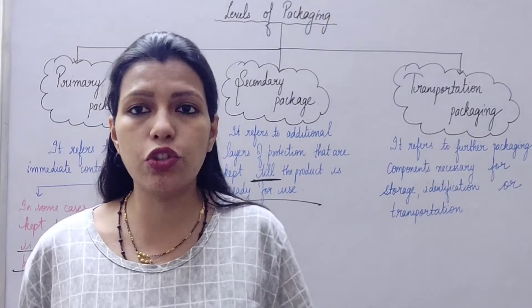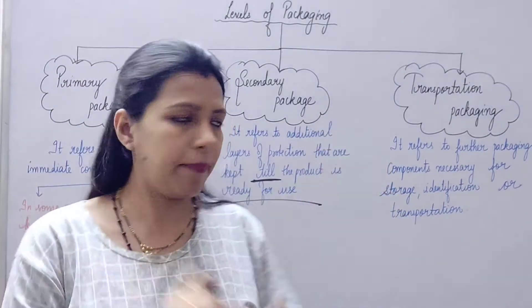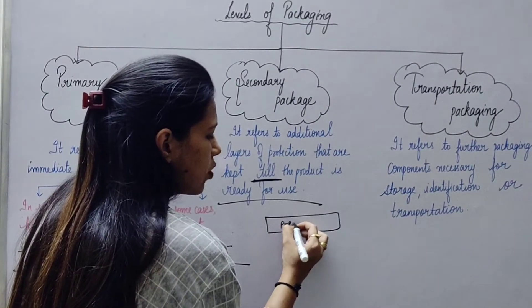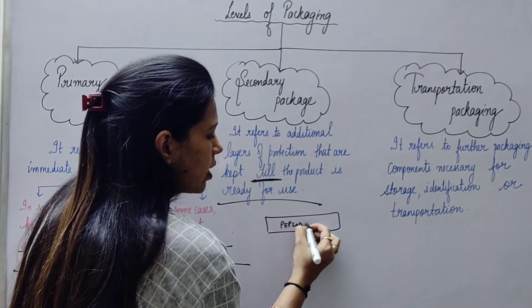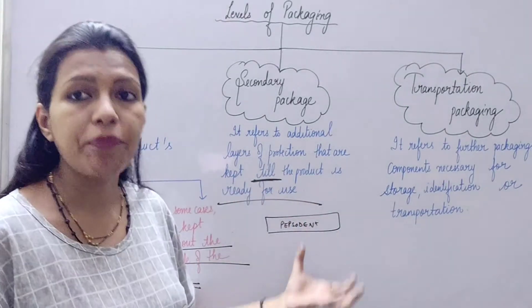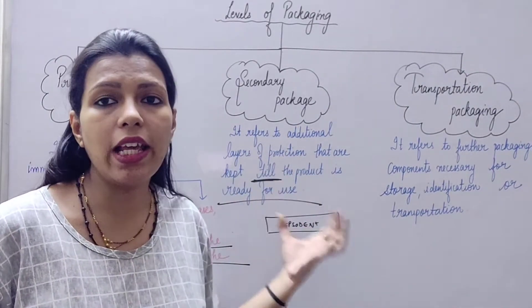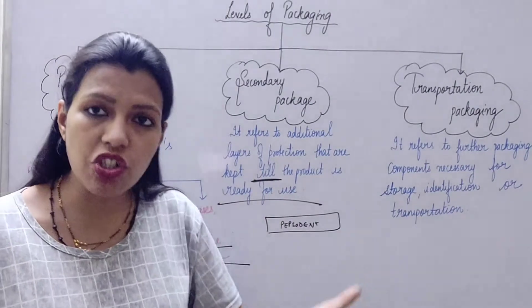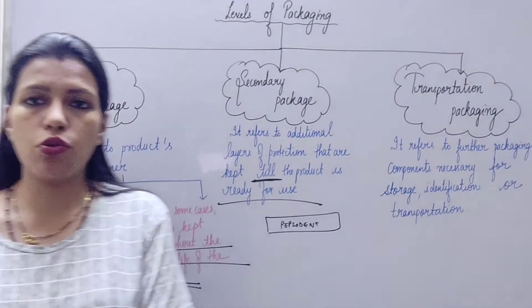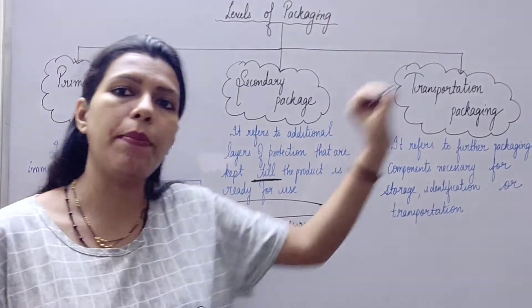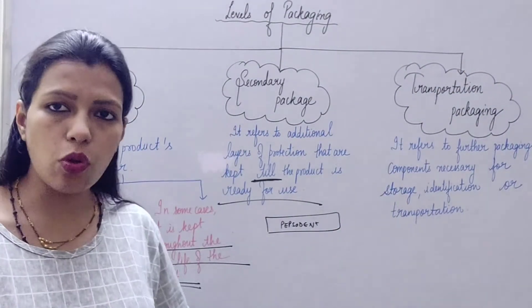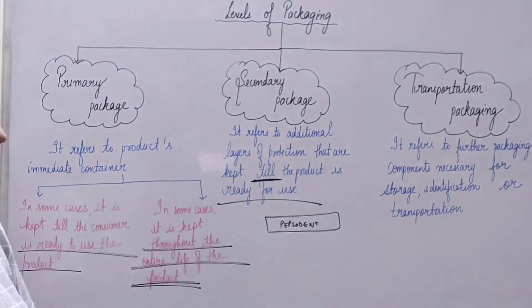For example, a toothpaste tube comes in a cardboard box. That cardboard box is the additional layer of packaging — that is the secondary package. When you start to use the toothpaste tube, you will dispose of the secondary package, which is the cardboard box. So the secondary package is disposed of before we start using the actual product.